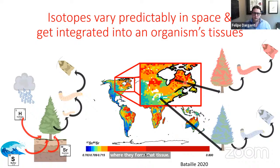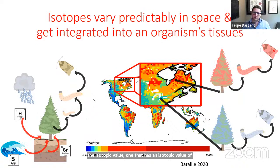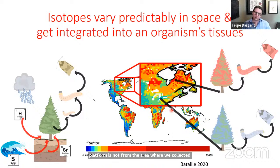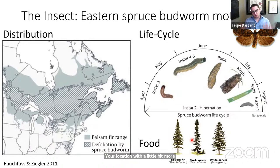The really important thing to understand is that when an organism moves, it carries with it the signal of the place where it formed that tissue. In this diagram, I'm showing two sites with different isotopic values — one red, one blue. That isotopic value is transferred through the food chain. When a spruce budworm moves from a red site to a blue site, we can infer that it is not from the area where we collected it and trace it back to its red-zone origin.